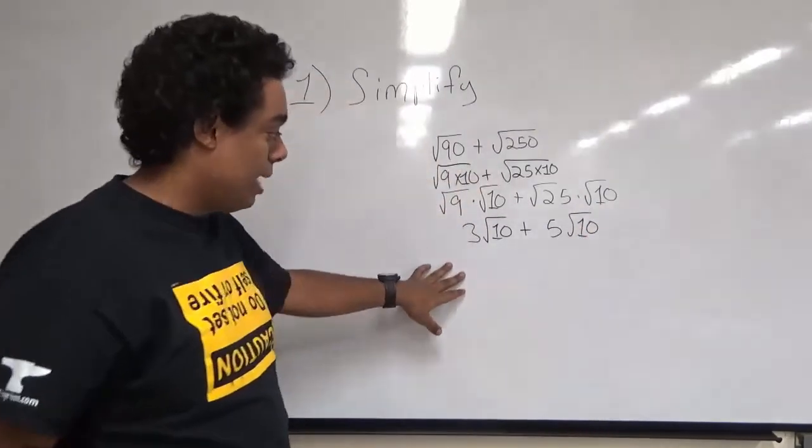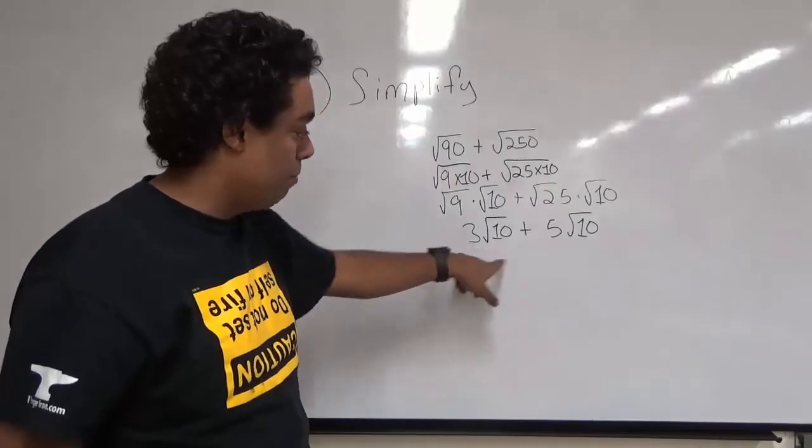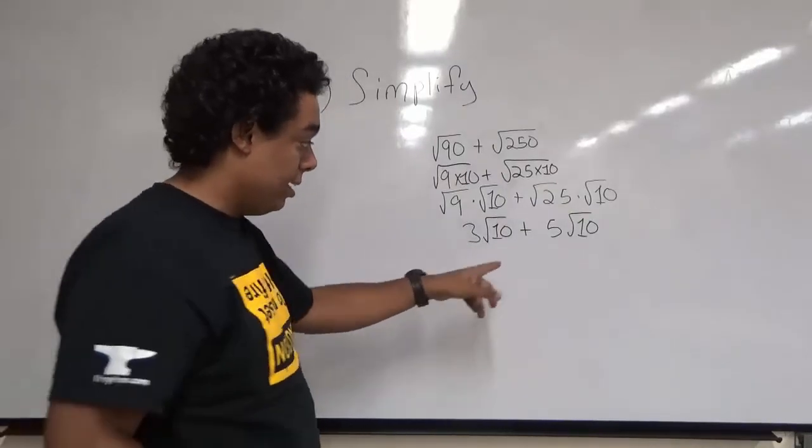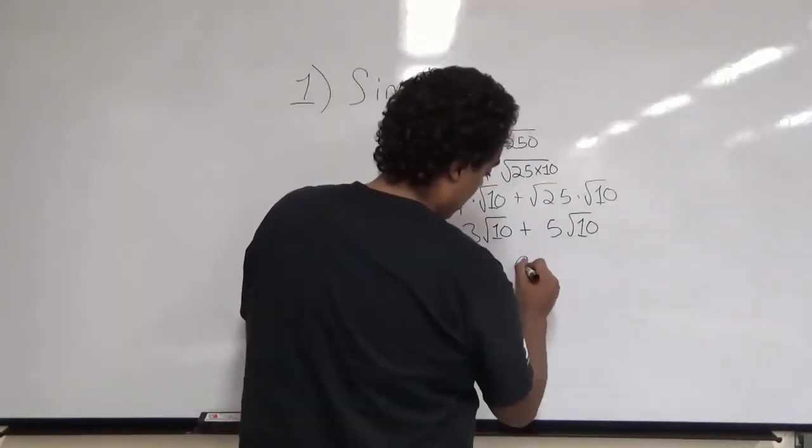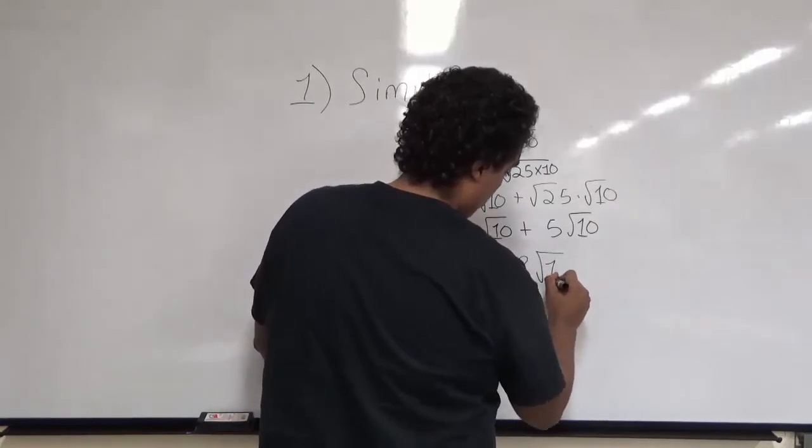And now we actually do have like terms, and we can combine these two. So 3 plus 5 is 8, and so we are left with 8 square root of 10.